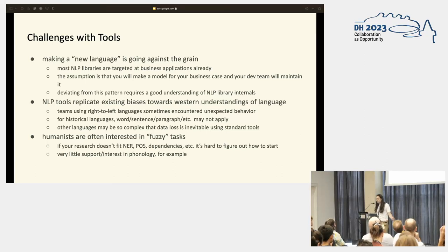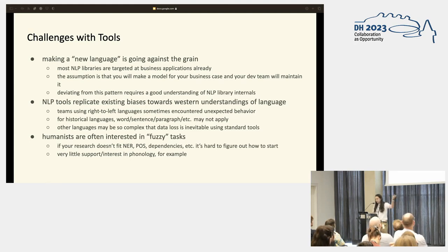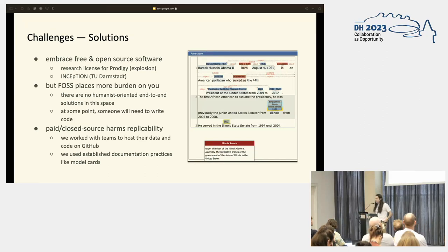Challenges with tools: if you're making a model for a new language you're already going against the grain. Most NLP libraries are targeted toward business applications — knowing whether product reviews are good or bad, with a dev team of eight to maintain the model. If you're deviating from that pattern, you need a good understanding of the library's internals. These tools also replicate existing biases toward Western understandings of language; teams annotating right-to-left languages encountered unexpected behavior and strange displays. For historical languages, concepts like word boundaries, sentence boundaries, and paragraphs may not apply even though the tool expects them. And humanists are often interested in what NLP developers would call fuzzy tasks — hard to fit neatly into POS or named entity categories.